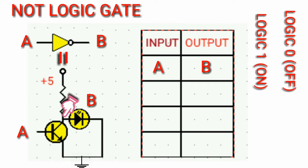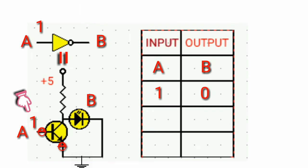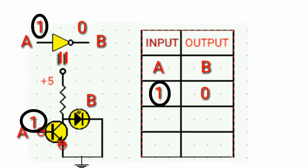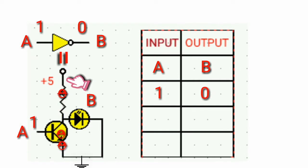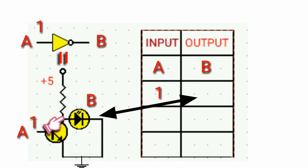When the input is logic high, then the output is logic low. From the simulation, when logic high is injected at the base (input), current flows from the base to the emitter. The current from the battery flows through the resistor, entering the collector, going out from the emitter, and back to the ground. Since the current is flowing through the ground, no current flows through the LED.